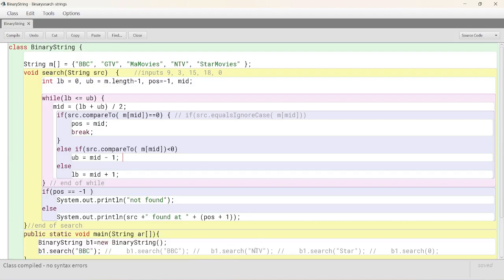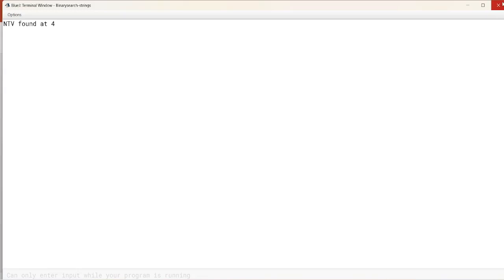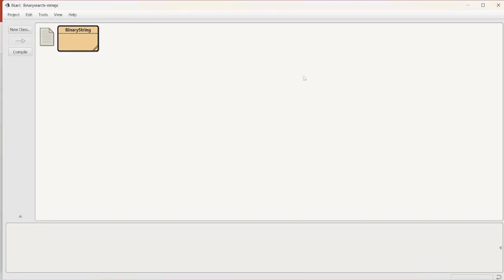BBC found at one. Now, let's assume we are searching for NTV. Replace BBC with NTV and it is at one, two, three, four. Third index but fourth position. Okay. In that case, control K. And execute the program. Main. Okay. And NTV found at four. This is about the binary search on strings.